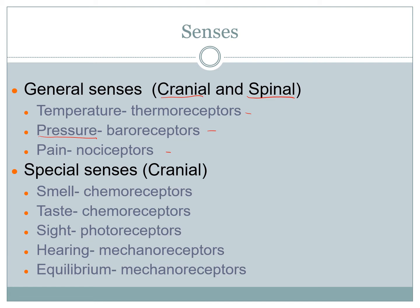There are five special receptors: smell, which is a chemoreceptor; taste; sight, which is a very special photoreceptor that we'll spend all of part two on; and then hearing and equilibrium, which are your mechanoreceptors.